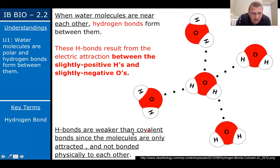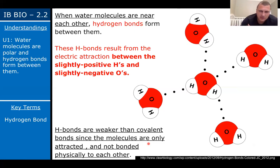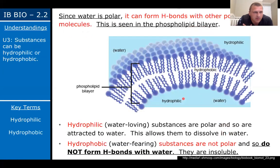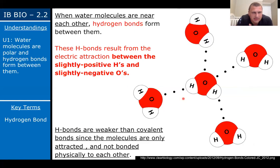Hydrogen bonds are weaker than covalent bonds. The molecules are only electrically attracted to each other — they are not physically bonded. So this water molecule and that water molecule don't physically bond; they're just being attracted to each other electronically through hydrogen bonding. Feel free to pause and look at the slide again or rewind if you need to.